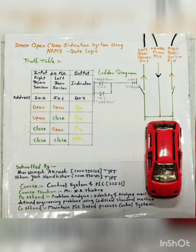Similarly, when the right door sensor is closed but the left door sensor is open, Q0.7 is still enabled and the indicator still glows. In the last case, when both door sensors are closed, our indicator should be in off state. Now this truth table is developed by a ladder diagram which is drawn over there.